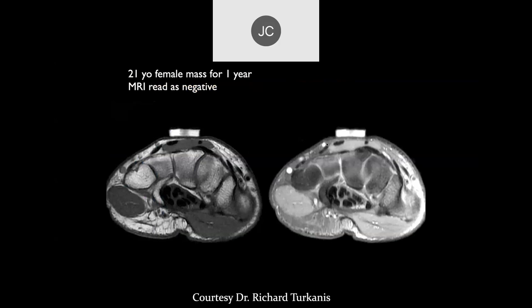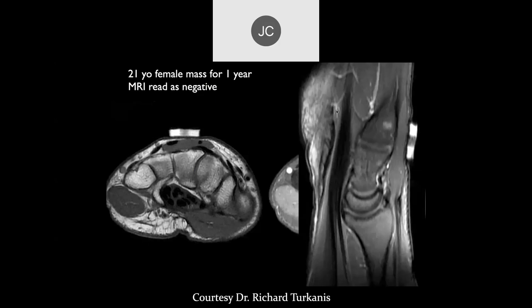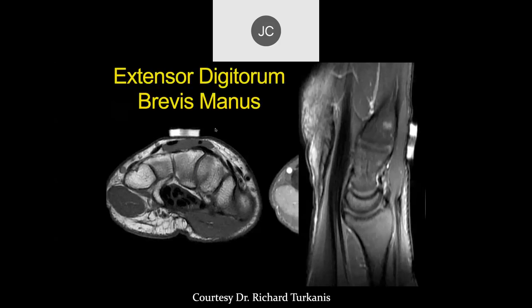21-year-old female, mass for one year, MRI read as negative. Similar to the last case — this was a local case read as a normal study, but the marker was placed right over the mass. This was an extensor digitorum brevis manus that wasn't recognized on the MR scan.